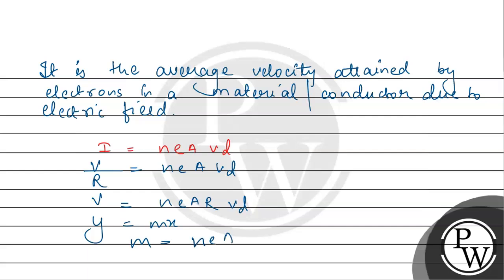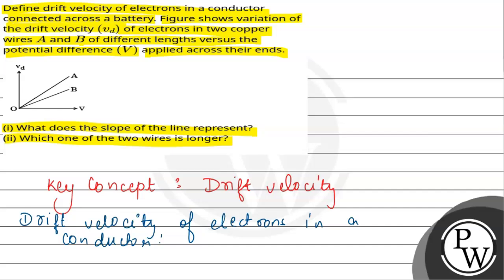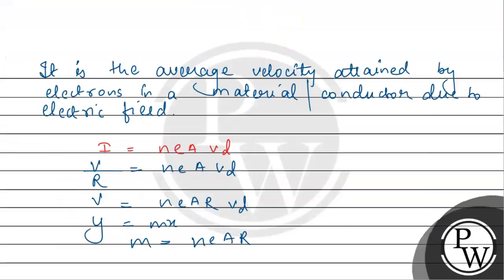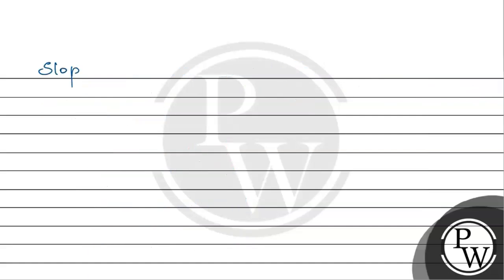The slope involves neA and R. We have a question here about two copper wires of different lengths with potential difference applied. First of all, what does the slope represent?